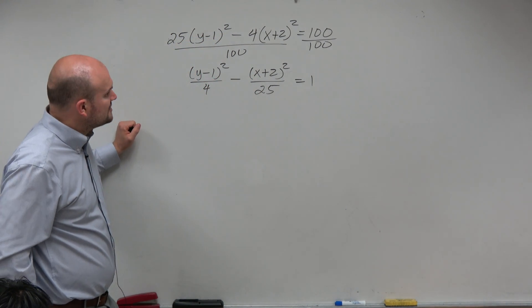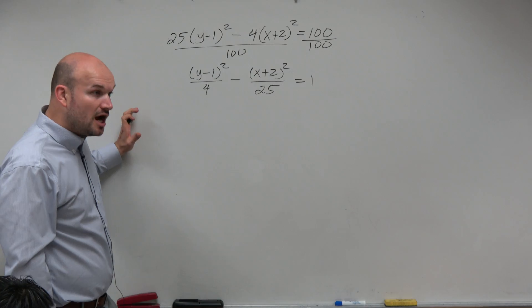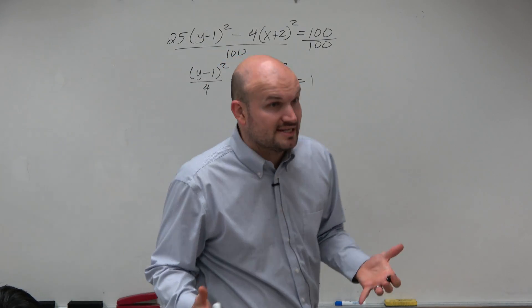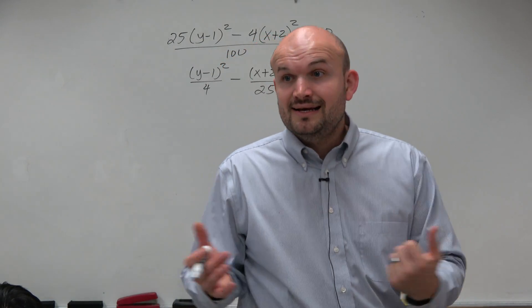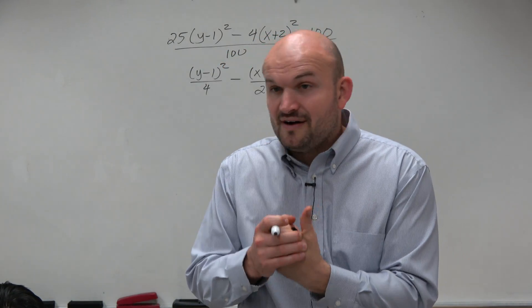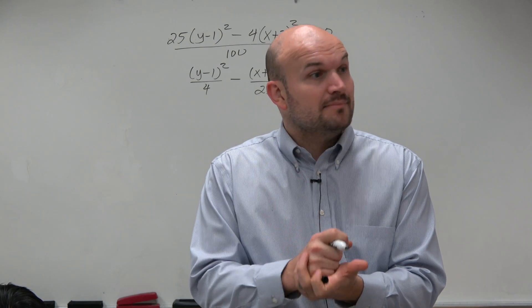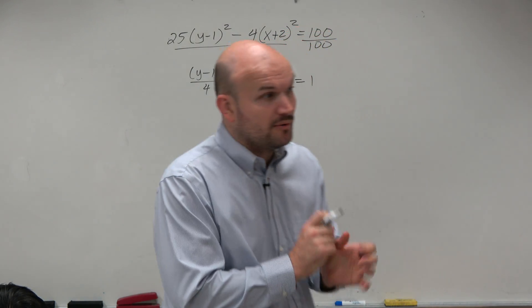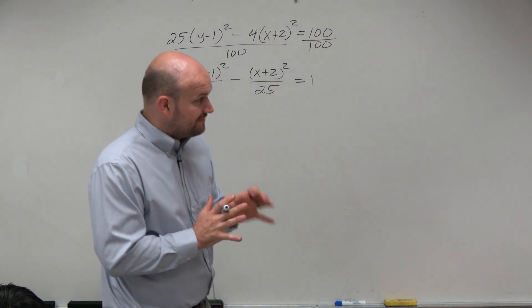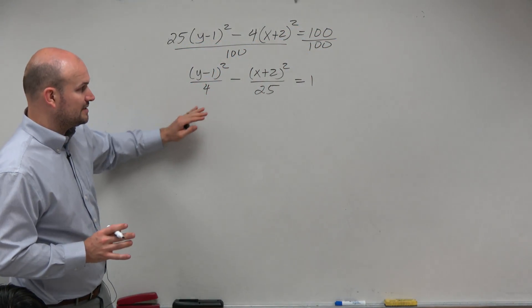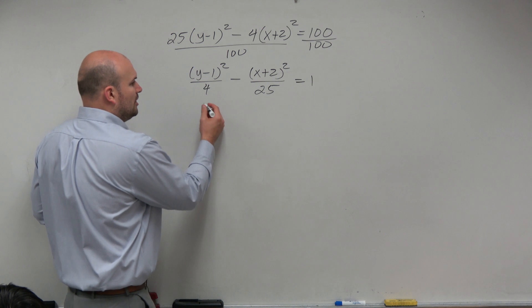So anyway, when you look at this, you can say now this is in standard form. It's nice that it's in standard form because now I can identify the vertex, my a and b, rather simply. But we've got to remember there are differences with this equation from what we learned with an ellipse.